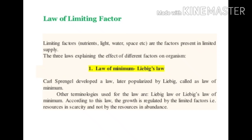The Liebig's index is associated with a law known as Liebig's law, which is one of the laws explaining the law of limiting factor. We already studied about Blackman's law of limiting factor in photosynthesis. Blackman's law states that when a biological process is controlled by several factors, the rate of that process is determined by the factor nearest to its minimal value. Similarly, Liebig's law states that the growth of a population is determined by the limiting factor — the factor nearest to its minimal value, not the most abundant factor.